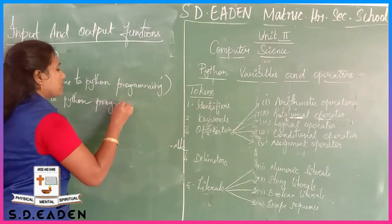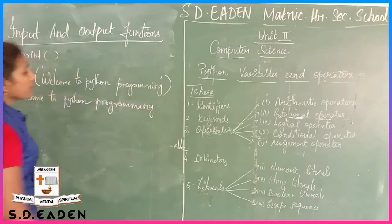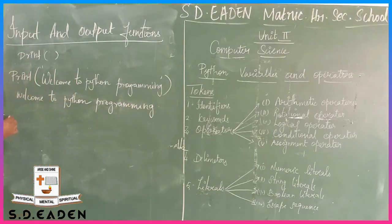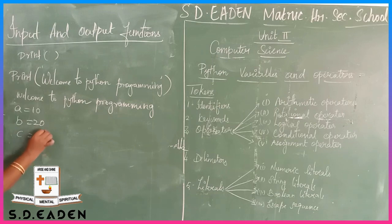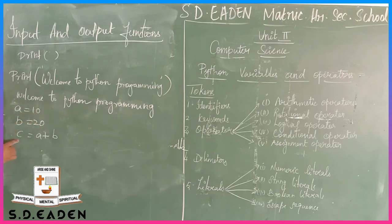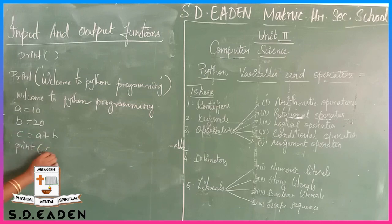This is the first syntax. In the second syntax, you can use one variable. For example, a equal to a plus b. Now store one value in c, then print c.